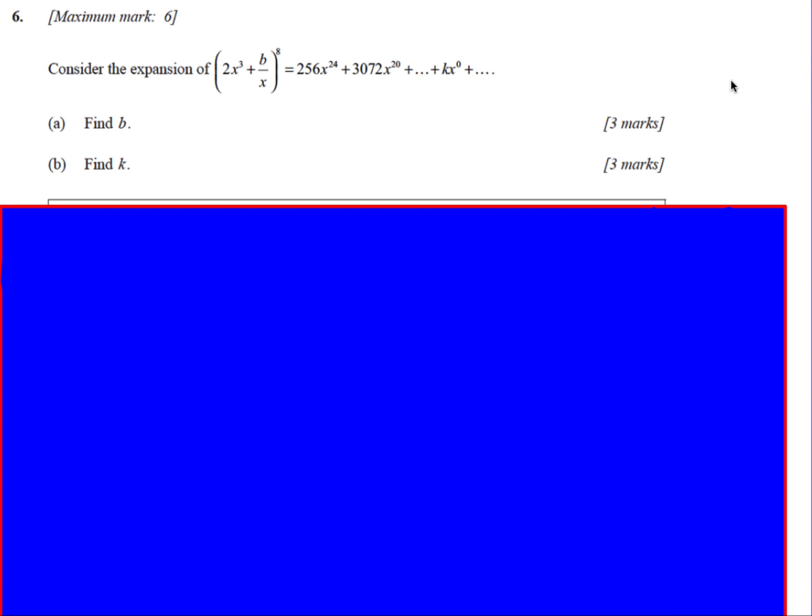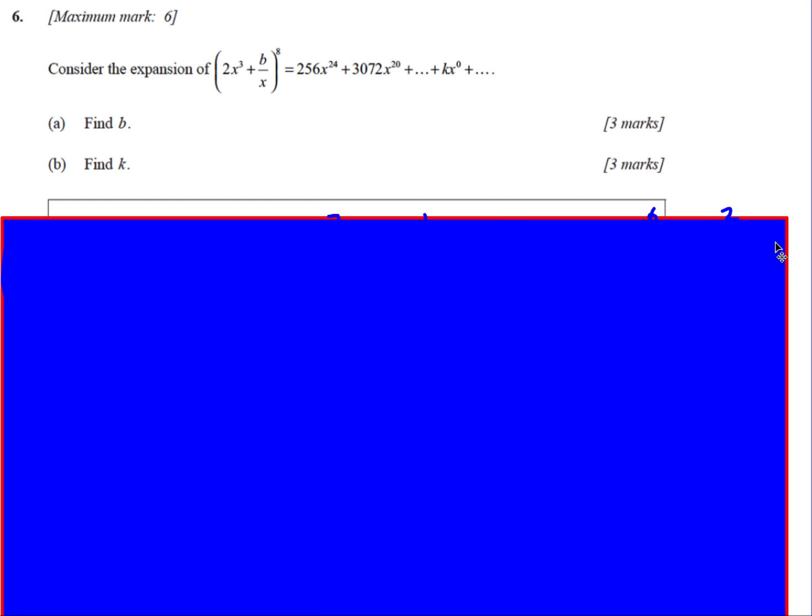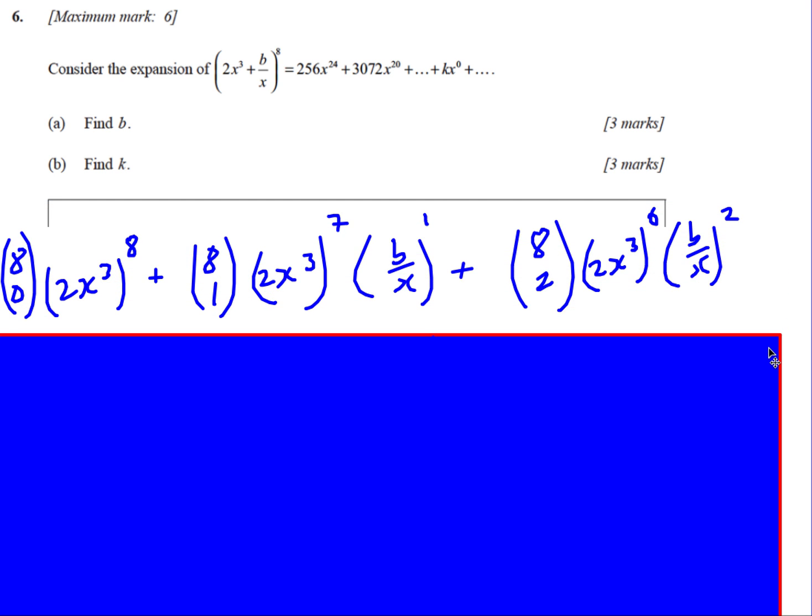Okay, next one. We've got 2x cubed plus b over x to the power 8. And then they've given us, we're kind of working backwards a little bit on this one. They've given us the first expansion, and we need to find out what the terms, what the letters are. So let's just do exactly the same thing as before.